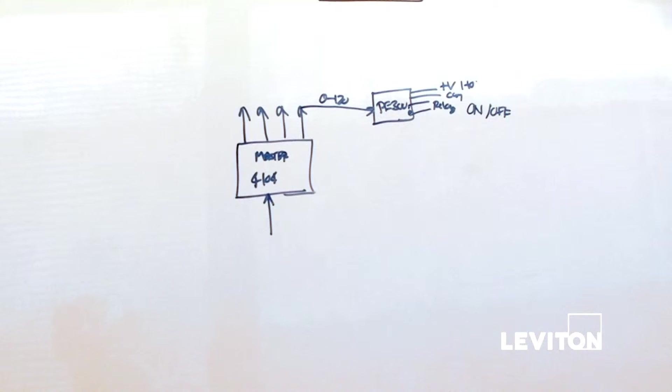You also use this for anything that's a 1 to 10 volt controlled ballast like an advanced Mark 7 ballast. So I've showed you what we would consider to be the smallest system and I've shown you how to have an entry station.